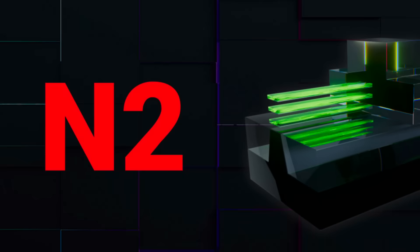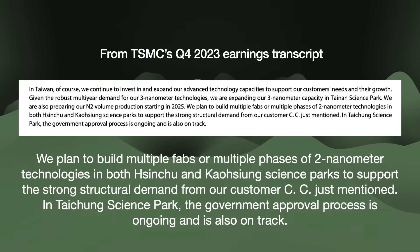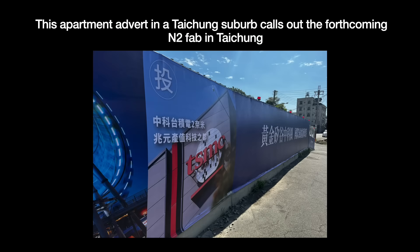TSMC's coming N2 process node is one of its most ambitious. In their fourth quarter 2023 earnings call, TSMC mentioned plans for three new N2 fabs in Xinju, Kaohsiung, and Taichung. Assuming those all get built, that's a lot of new fabs. But it's more than just that.